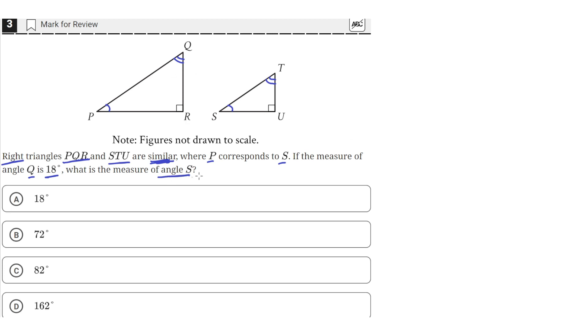And we can use that to find the measure of angle S. So we're given that the measure of angle Q is 18 degrees. And by the property of triangles that all the angles must add up to 180 degrees, and this angle here is 90, then that means this angle here has to be 72 degrees. Because 72 plus 90 plus 18 adds up to 180.